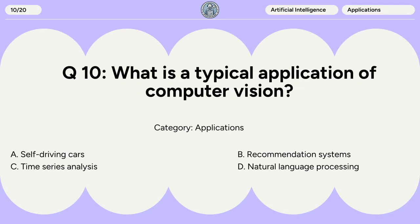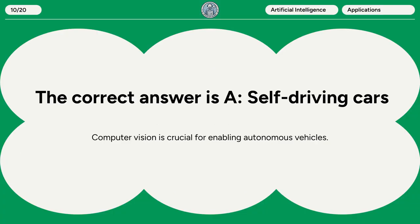Question 10. What is a typical application of computer vision? A. Self-driving cars. B. Recommendation systems. C. Time series analysis. D. Natural language processing. The correct answer is A: self-driving cars. Computer vision is crucial for enabling autonomous vehicles.